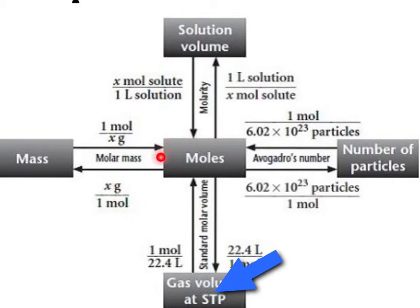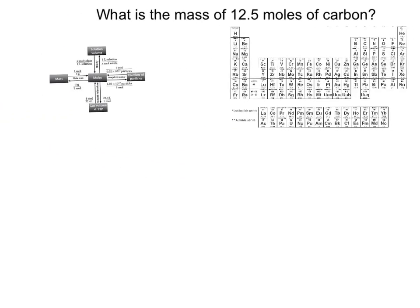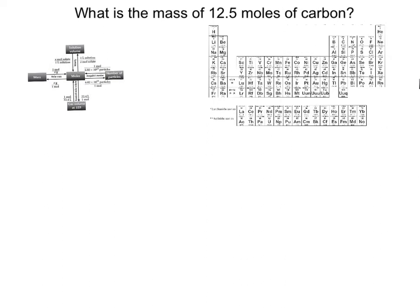Right at the center is this unit called the mole. The mole is a central unit in chemistry, and you always have to pass through it. So basically you are always converting into the mole first, and then you can go anywhere from there. We are going to try three examples together. So let's try this one first: what is the mass of 12.5 moles of carbon?